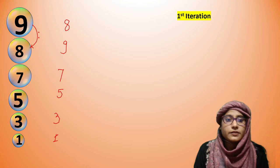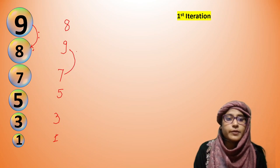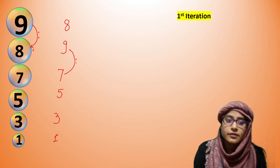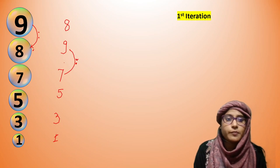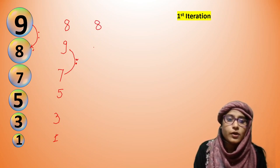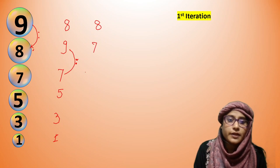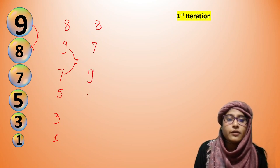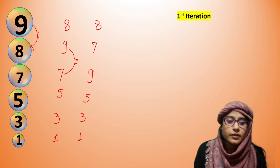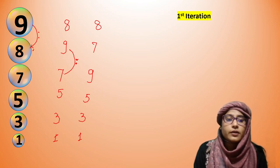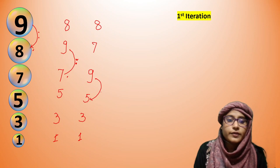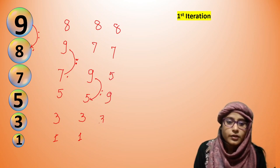After swapping, 8 is here, 9 moves forward, and 7, 5, 3, 1 follow. The pointer moves again. We check 9 is greater than 5 — yes, then swap again. Now we have 8, 7, 5, 9, 3, 1. Then the pointer moves: 9 greater than 3? Yes — swap again. Now 8, 7, 5, 3, 9, 1.